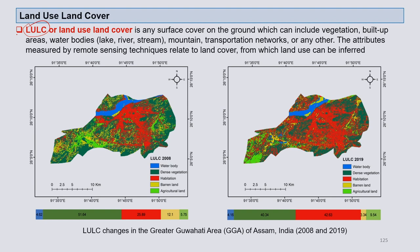Many of you might already know about these terminologies. Land use and land cover means any surface cover on the ground, which includes vegetation, built-up areas, water bodies like lakes, rivers, or streams, mountains, transportation networks, or anything else on the ground. The attributes measured by remote sensing techniques are related to land cover, from which land use can be inferred.